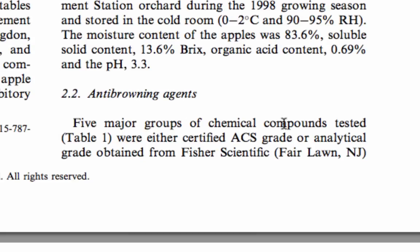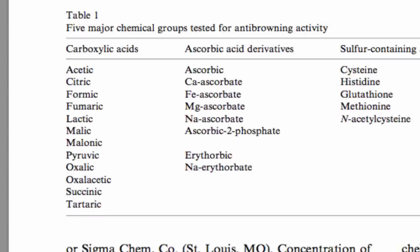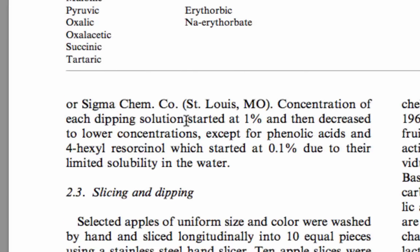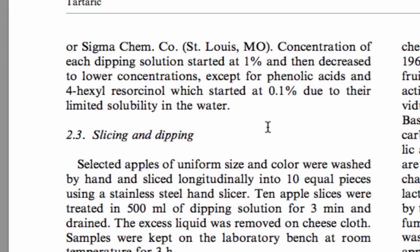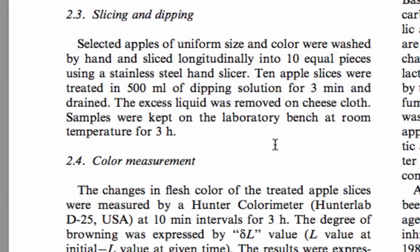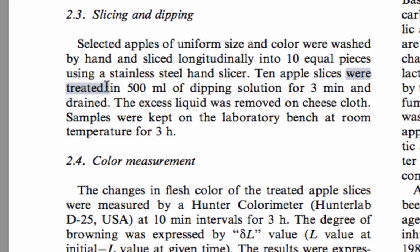Looking at the next section: 'Five major groups of chemical compounds tested were certified.' 'Multiplified concentration of each dipping solution started at 1% and then decreased to lower concentrations.' So everything is past tense, and that makes sense because the experiment is finished. 'Selected apples of uniform size and color were washed by hand and sliced longitudinally.' 'Ten apple slices were treated.' There is another past passive. 'The excess liquid was removed.'